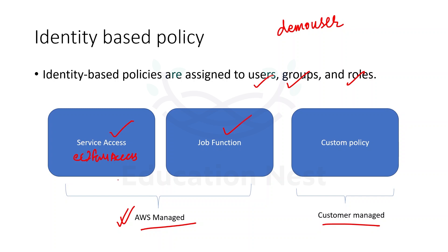If you want to create a policy for some administrators, an administrator will require permissions for many services. So instead of individually attaching multiple policies to an administrator, AWS has already created some policies according to the job role — like admins, or for developers we have the Power User policy. All the services generally required by developers would have permissions under this Power User policy.